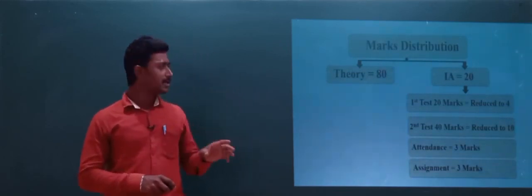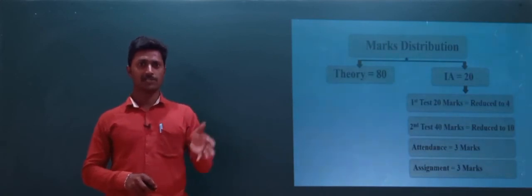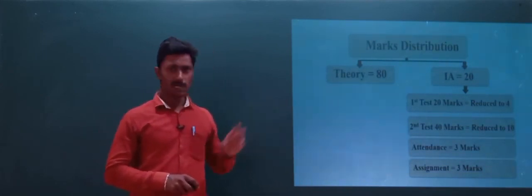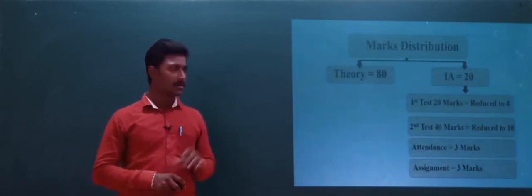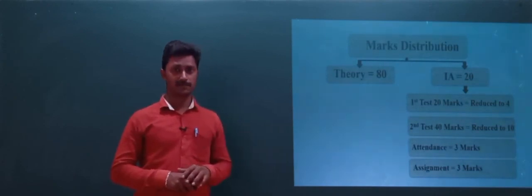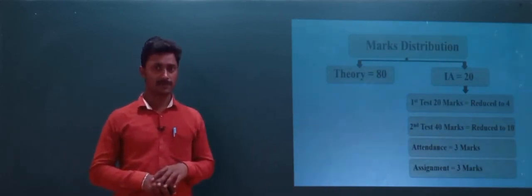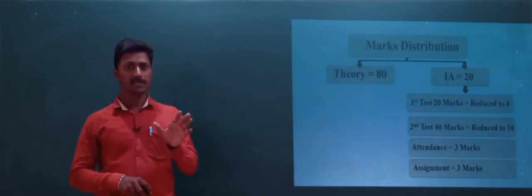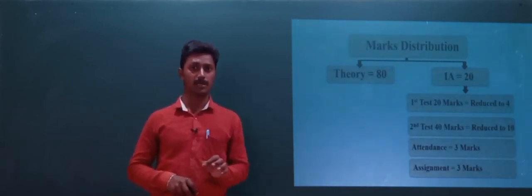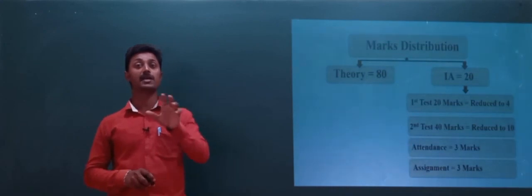The internal assessment marks are divided into different criteria. We take two tests: the first test is 20 marks reduced to 4 marks, and the second test is 40 marks reduced to 10 marks, totaling 14 marks. You will get 3 marks for attendance and 3 marks for assignments, making a total of 20 internal marks. 75% attendance is compulsory to attend the end semester examination.